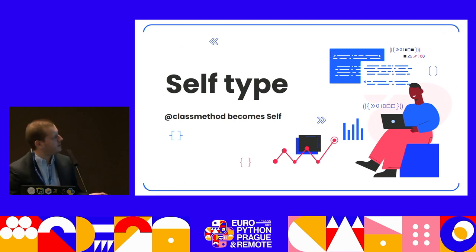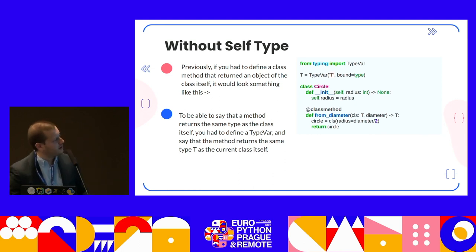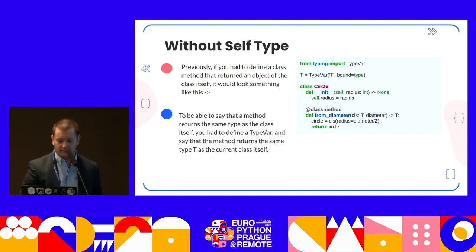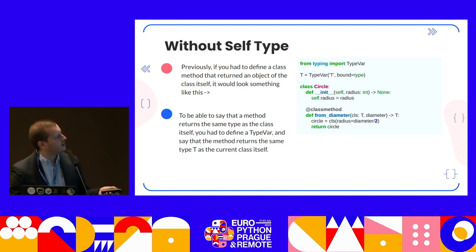The self-type: the class method becomes Self in Python 3.11. Previously, if you had to define a class method that returns an object of the class itself, you would define a TypeVar T and say the method returns T, indicating it returns the same type as the current class itself.